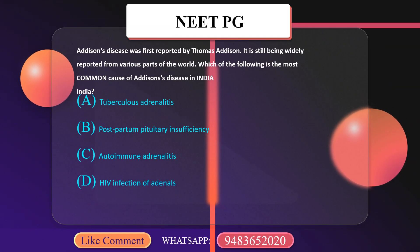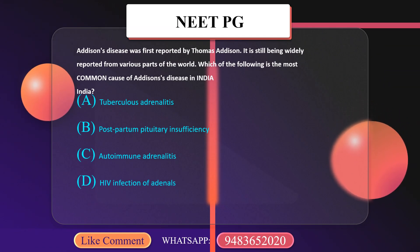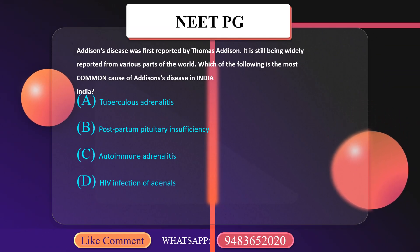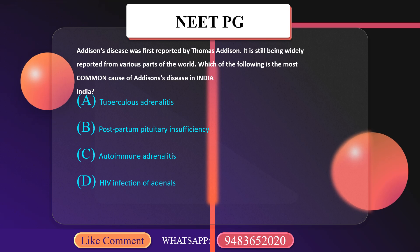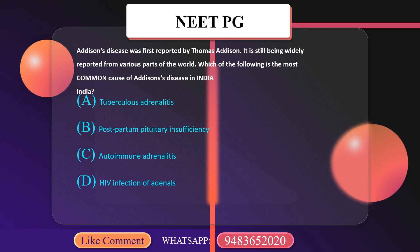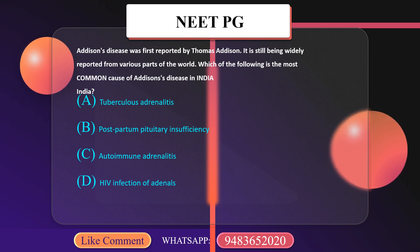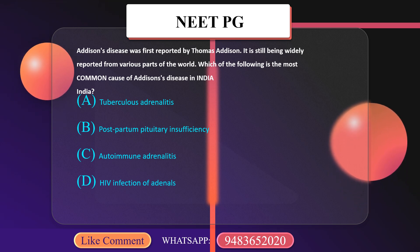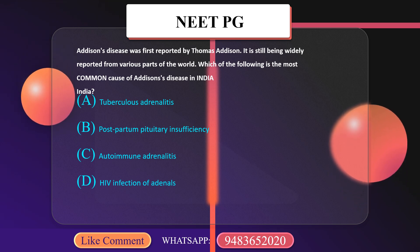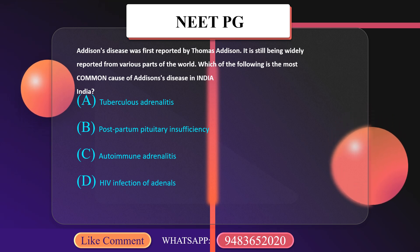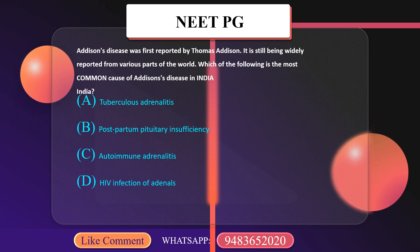Addison's disease was first reported by Thomas Addison. It is still being widely reported from various parts of the world. Which of the following is the most common cause of Addison's disease in India?